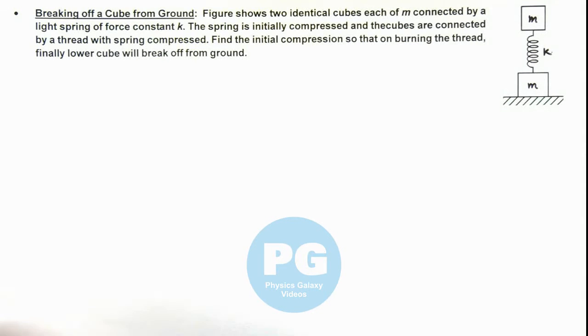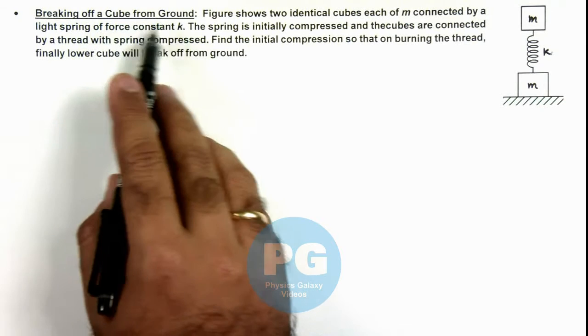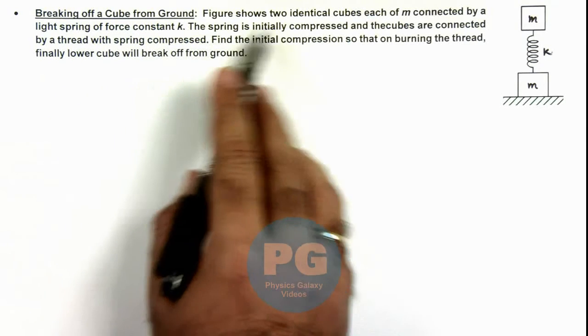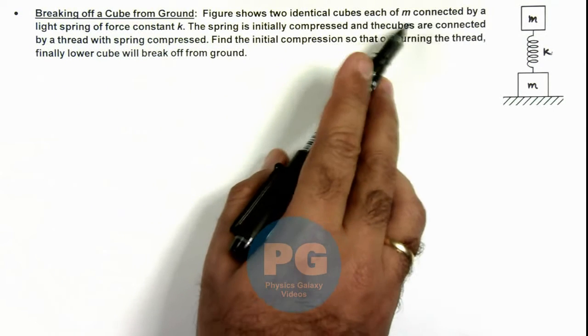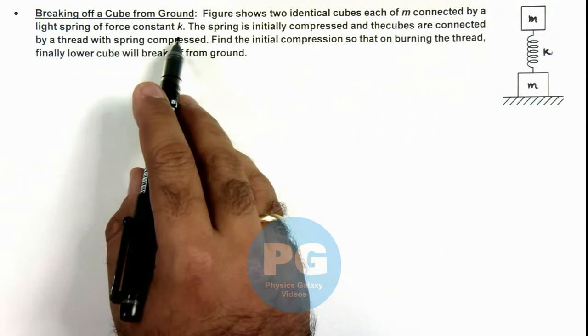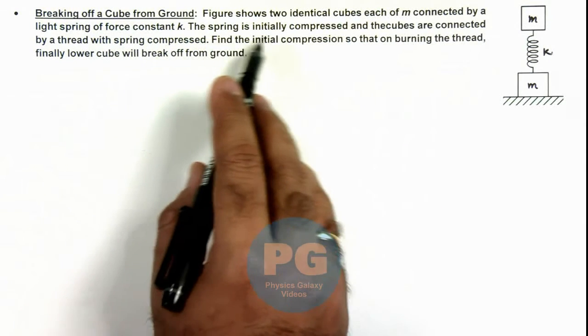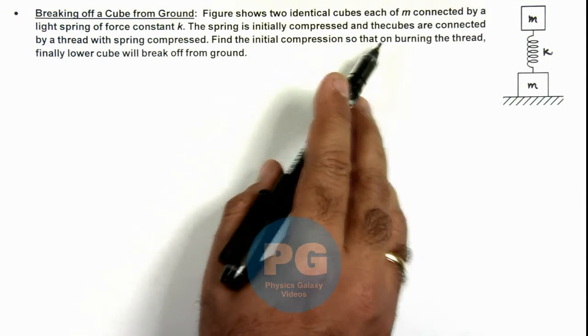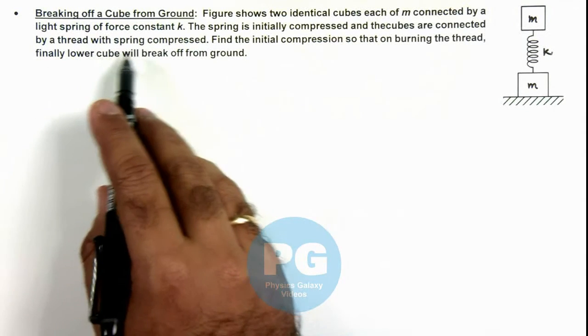This illustration is about breaking of a cube from ground. Here the figure shows two identical cubes, each of mass m, connected by a light spring of force constant k. The spring is initially compressed and the cubes are connected by a thread with spring compressed.